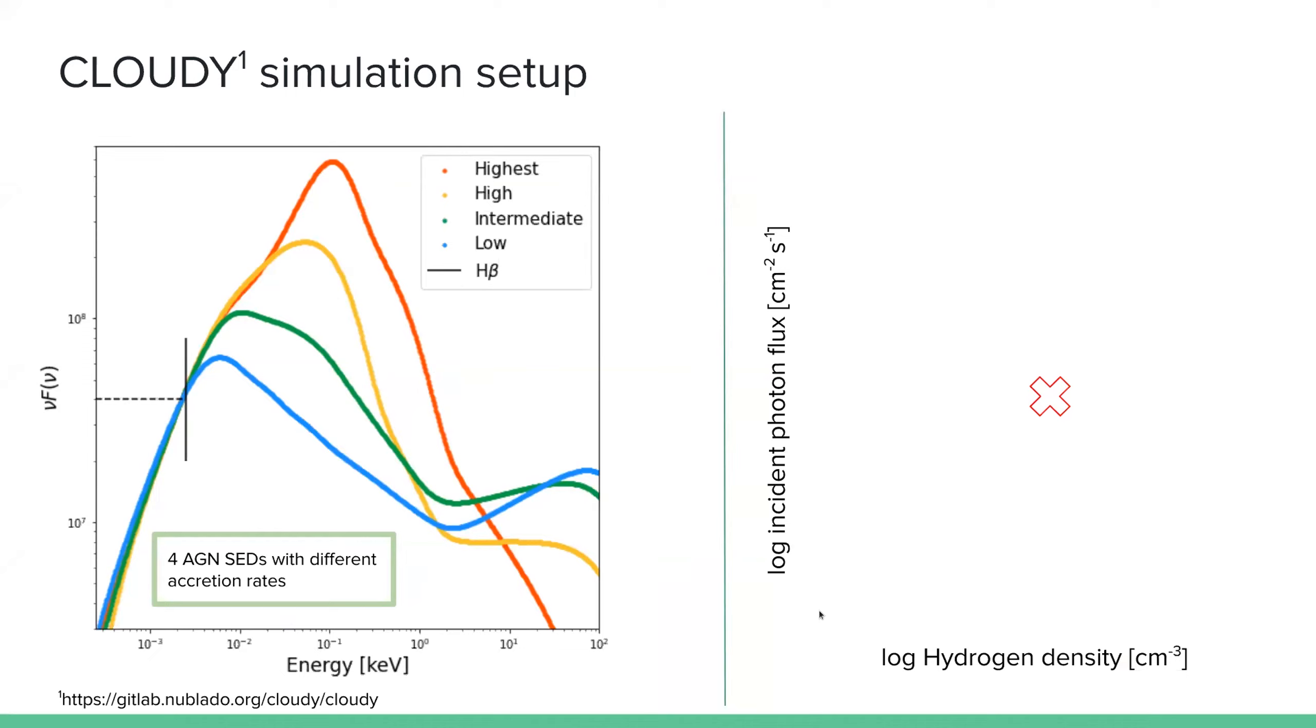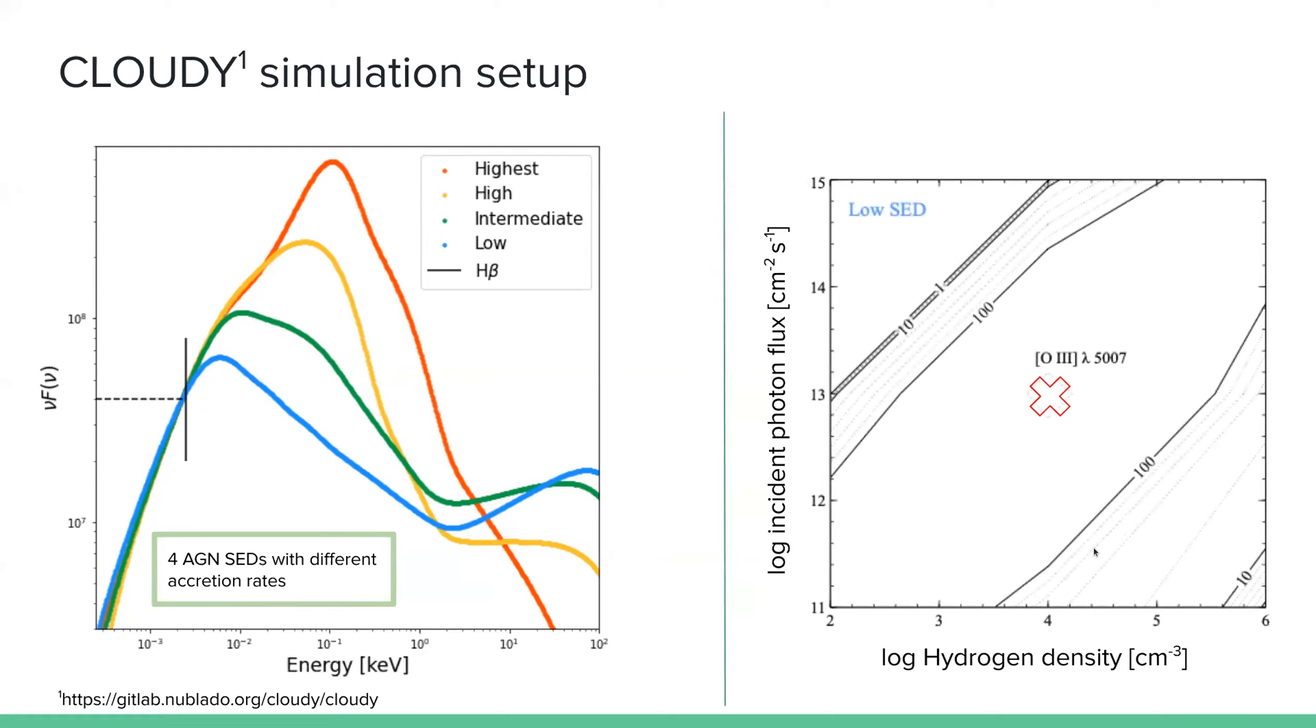And in the Cloudy, as an input, we have to specify the different hydrogen density and then incident photon flux. And then we run the code, and we have this contour.